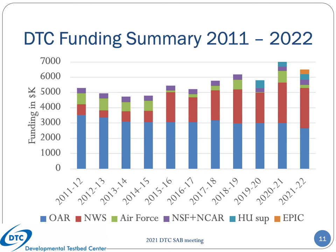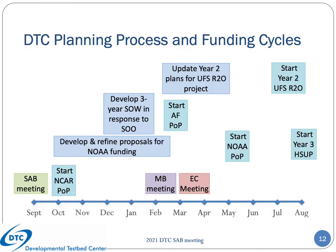This slide shows the funding history for the DTC over the past 11 years, including a breakdown by sponsor. Note that $300K was provided this year by the EPIC Program Office to support the DTC transitioning some of its software support activities to the EPIC contractor. In some ways, this graphic oversimplifies the actual funding and planning situation because the period of performance and planning processes vary by sponsor. This schematic depicts the timeline for planning and implementation for this current year, which captures the complexity of our planning process. Communication between the partners through the executive committee and management board is critical to maintaining a strong partnership where the various funded activities weave together into an integrated plan.